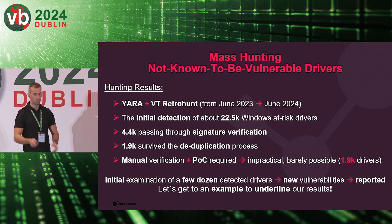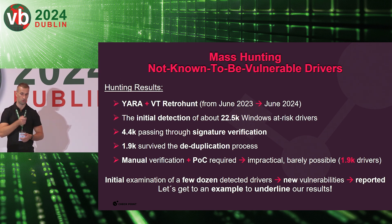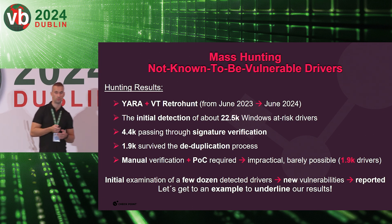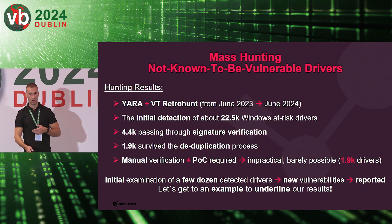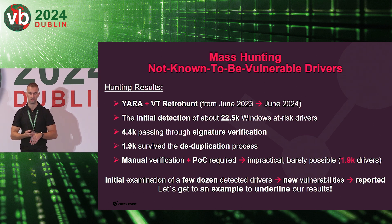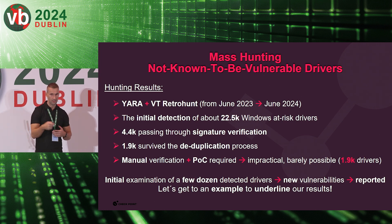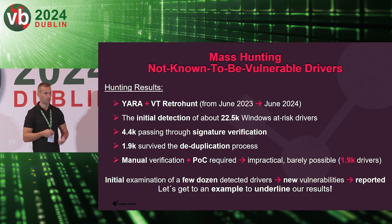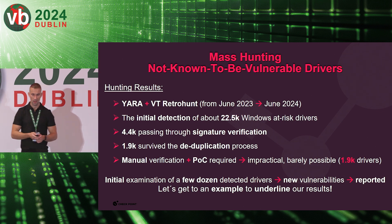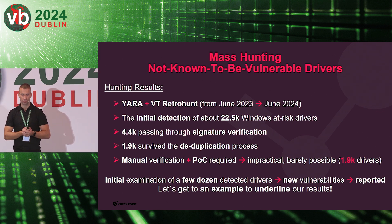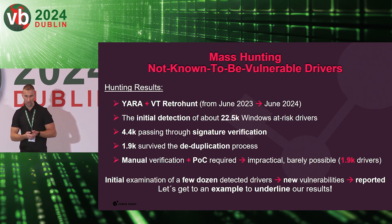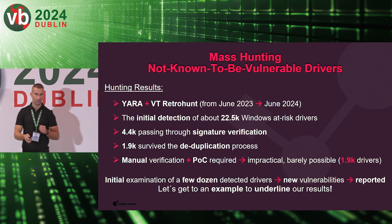Regarding the hunting results: we used the YARA rule with the VirusTotal retrohunt service over a one-year period from June 2023 to June 2024. The initial detection was approximately 22,500 drivers. After post-processing through signature verification we got 4,400 drivers. The deduplication process left almost 2,000 drivers. Even so, there was still a need for manual verification and proof of concept creation, which is impractical to perform on almost 2,000 at-risk drivers. Still, our initial examination of a few dozen of them revealed some new vulnerabilities we responsibly reported.